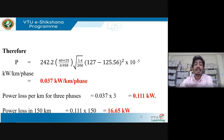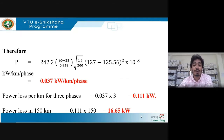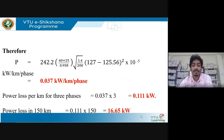The line length is given as 150 km. For one kilometer the loss is 0.11 kW, so for a 150 km line the total corona power loss is 0.11 × 150 = 16.65 kilowatts.